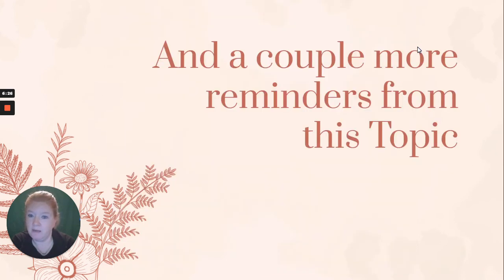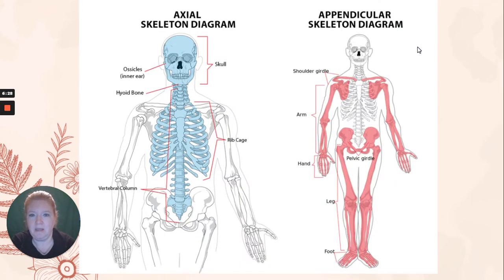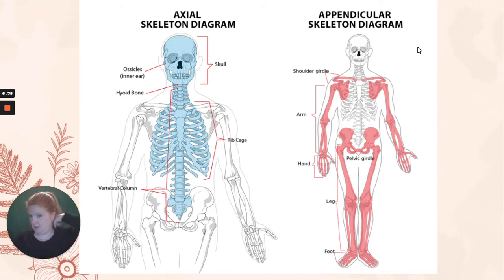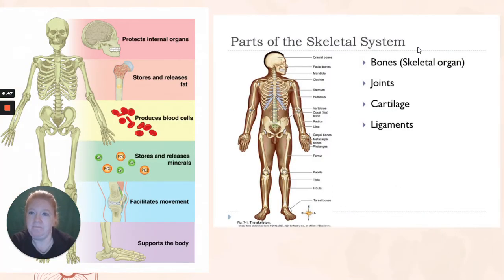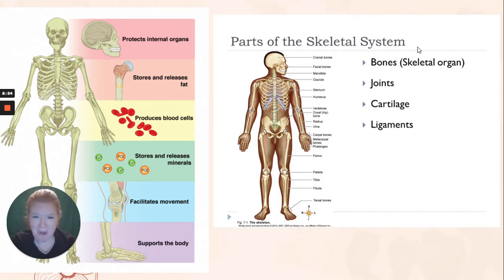And a couple more reminders from this topic. Axial skeleton and appendicular skeleton. Axial is along the axis: cranium, hyoid, ossicles, vertebrae, ribs, and sternum. The appendicular skeleton is appendages — it's how they attach to the axial skeleton: your arms and legs and their attachments.